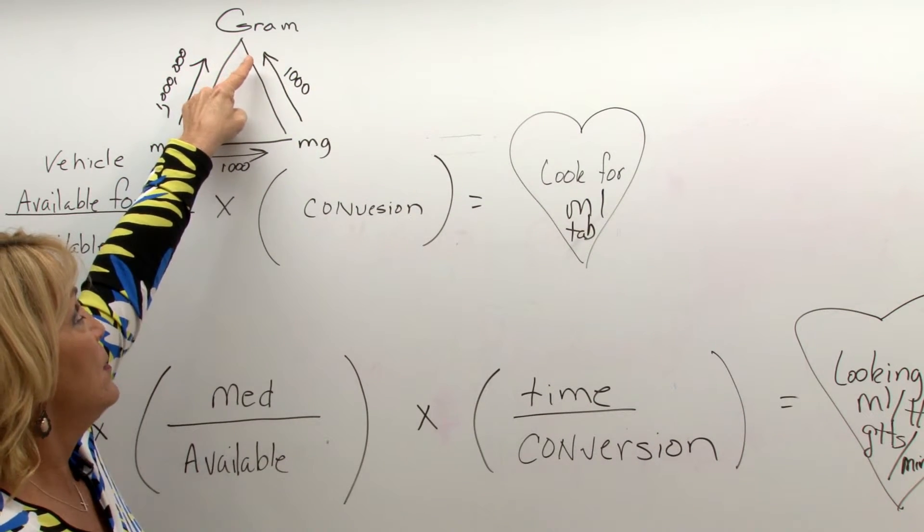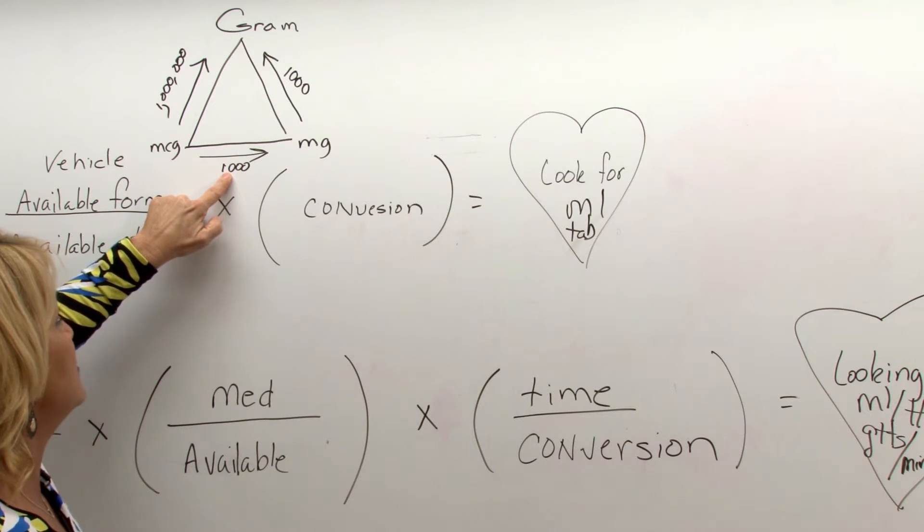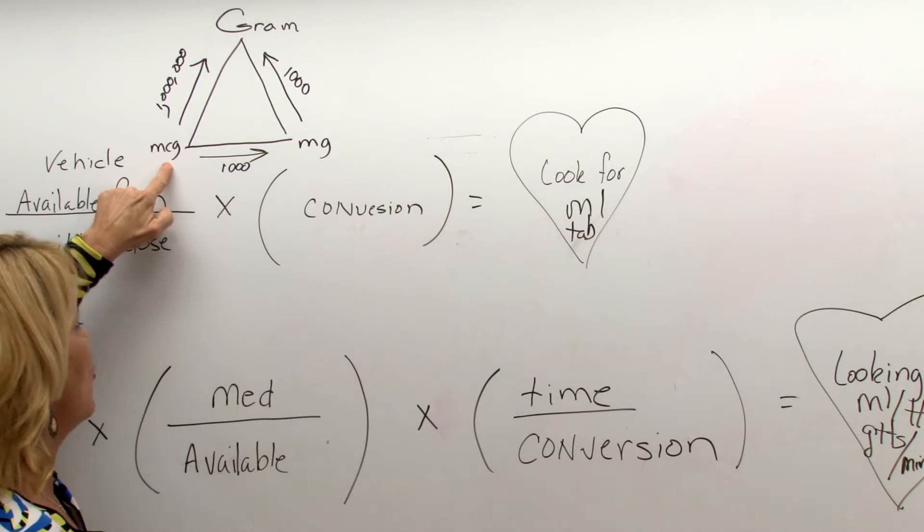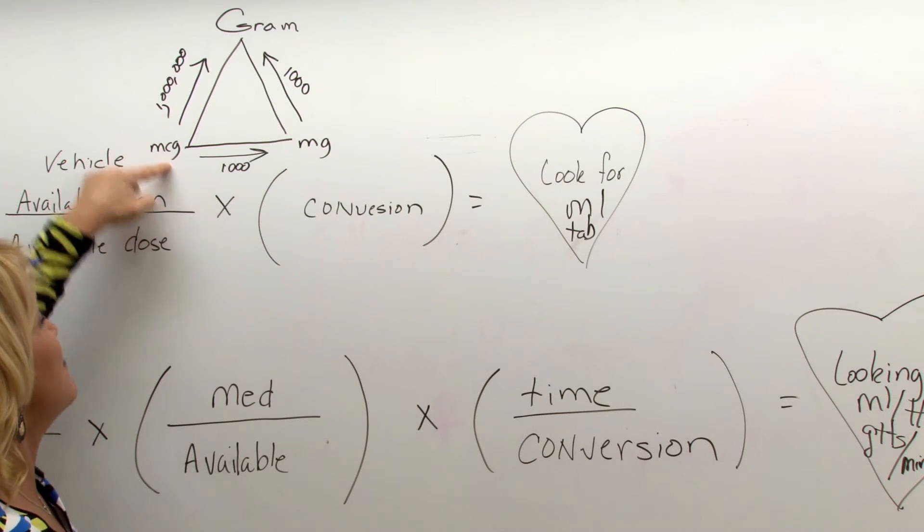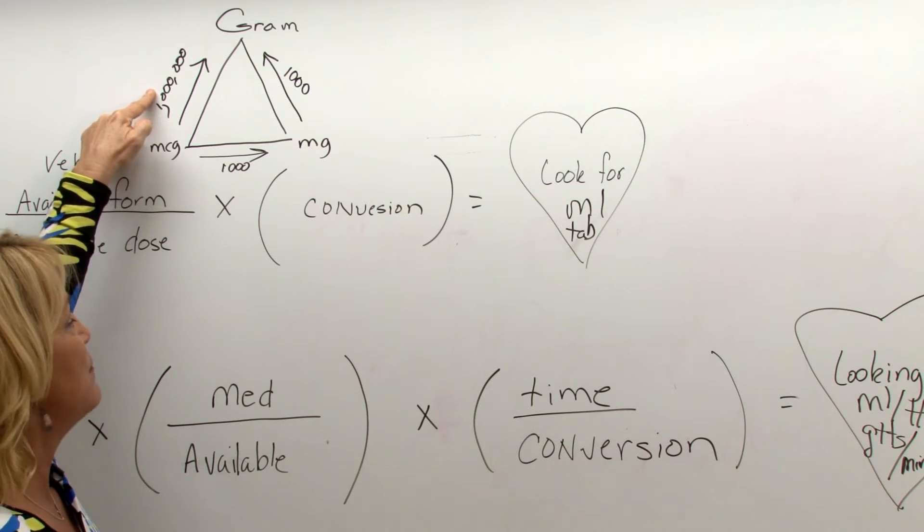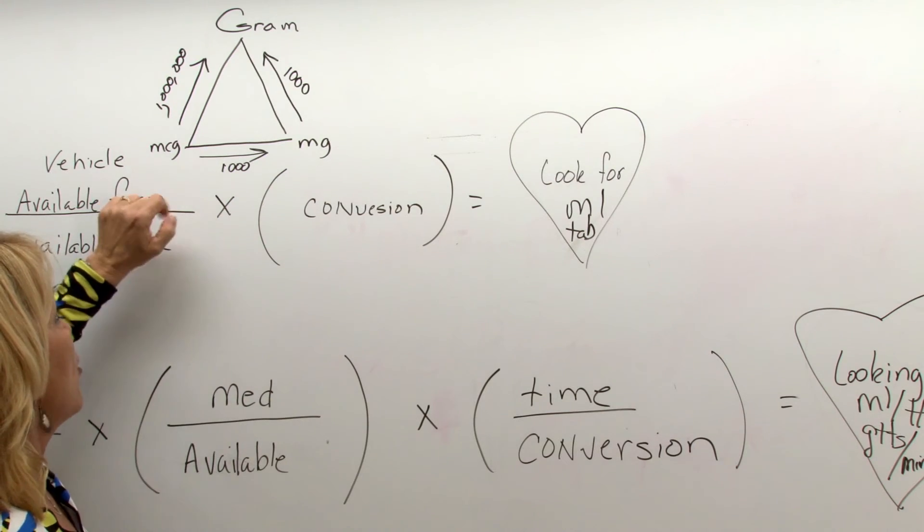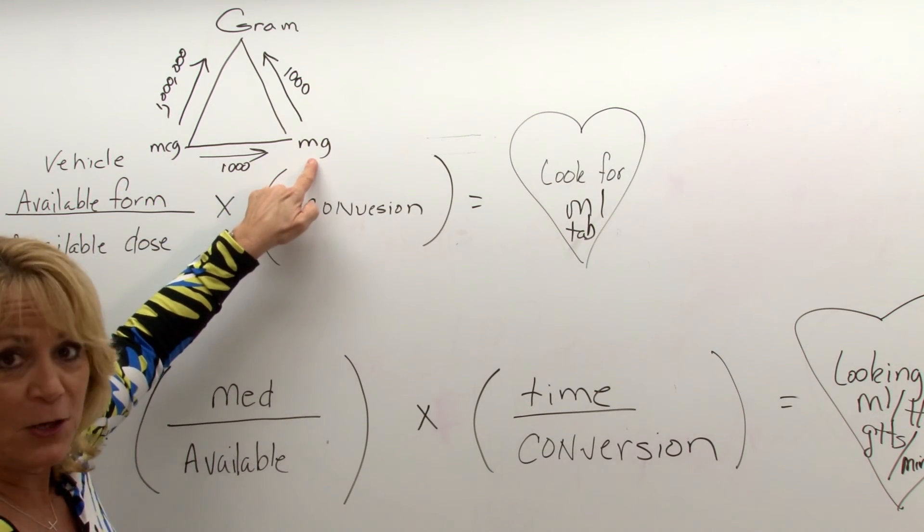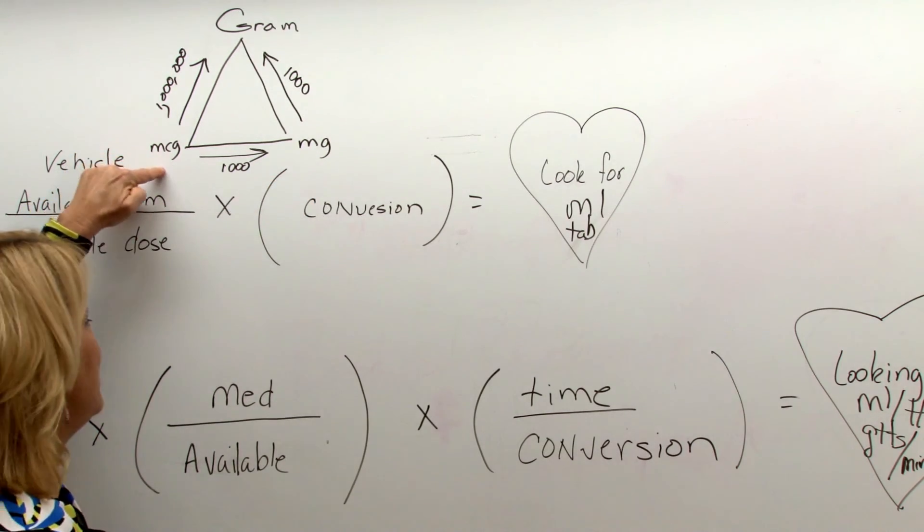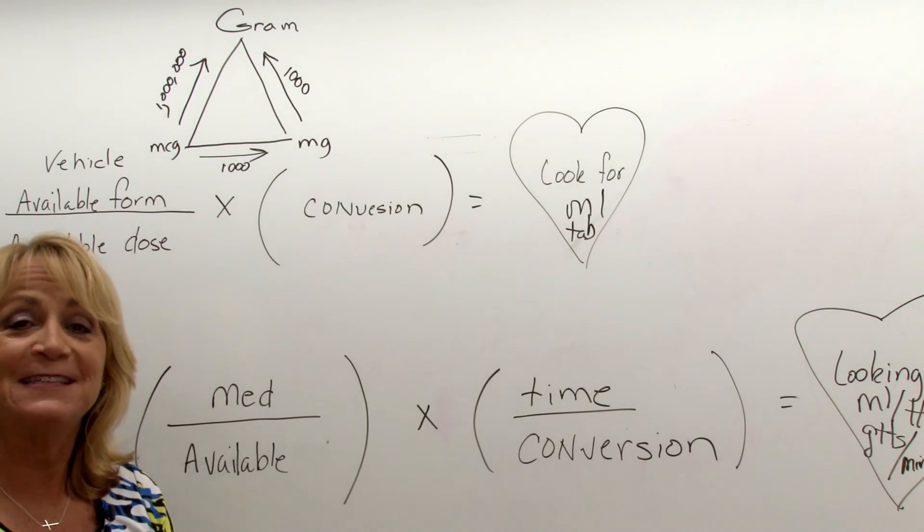Grandma drove a thousand miles in her little MG. Yes, a thousand miles to get to the microbrewery to enjoy some of the million brews. So whatever helps you remember that there are one thousand milligrams in a gram. There are a thousand micrograms in a milligram and there are a million micrograms in a gram. And that's as easy as it is.